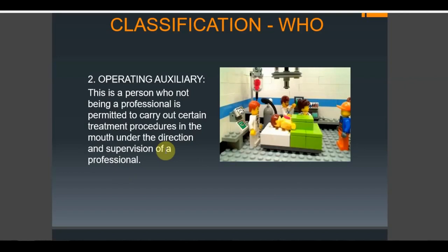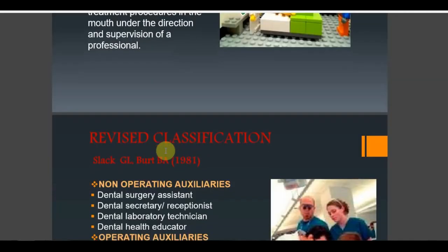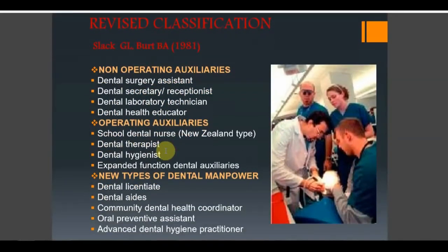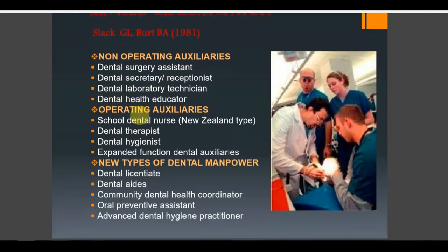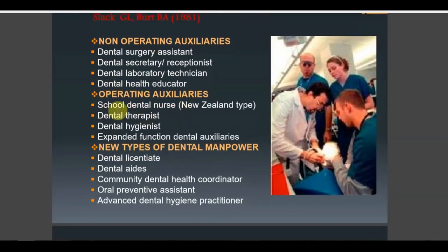The revised classification divides auxiliaries into non-operating and operating. Non-operating includes dental surgery assistant, secretary or receptionist, lab technician, and dental health educator. Operating auxiliaries include school dental nurse, dental therapist, dental hygienist, and expanded function dental auxiliaries. Newer types of general manpower include the licentiate dental aide, community dental health coordinator or preventive assistant, and advanced dental hygiene practitioner.